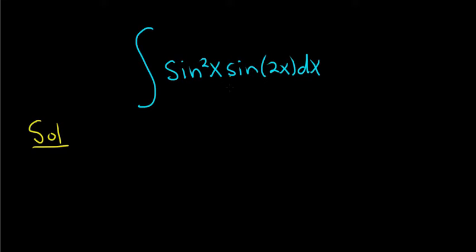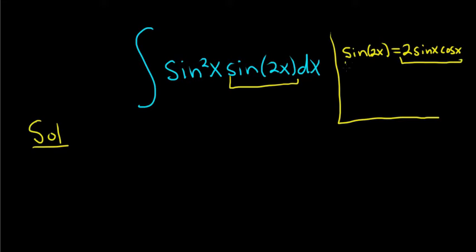So the problematic piece is the sine 2x. Whenever you see sine 2x, there is an identity that is super useful. The sine of 2x is equal to 2 sine x cosine x. So a good first step in this problem is to just eliminate or replace the sine 2x with this piece here.